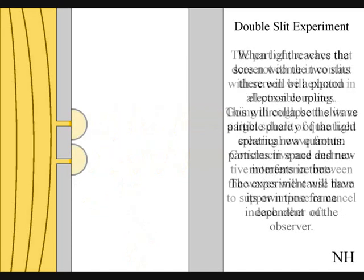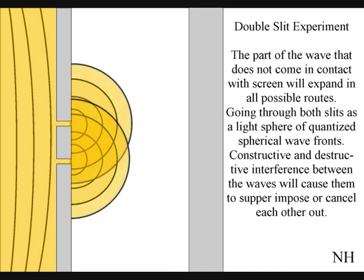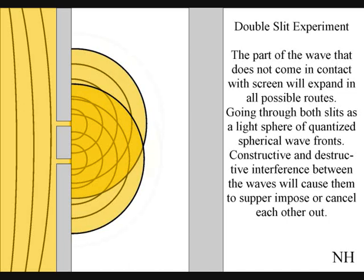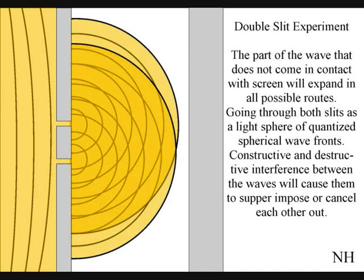When we turn the detector off, we remove the photon-electron coupling, and in time the interference pattern will reform. Just like in Newton's first law of motion, the interference pattern will continue to maintain its state unless acted upon by an external force.